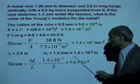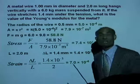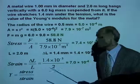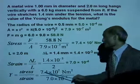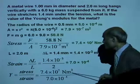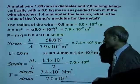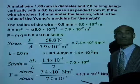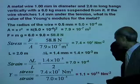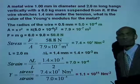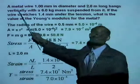We now have both the stress and the strain. Therefore, Young's modulus is stress divided by strain: 7.4 times 10 to the 7 newtons per meter squared divided by 7 times 10 to the negative 4, which gives 1.1 times 10 to the 11 newtons per meter squared. That is the Young's modulus of this metal wire.